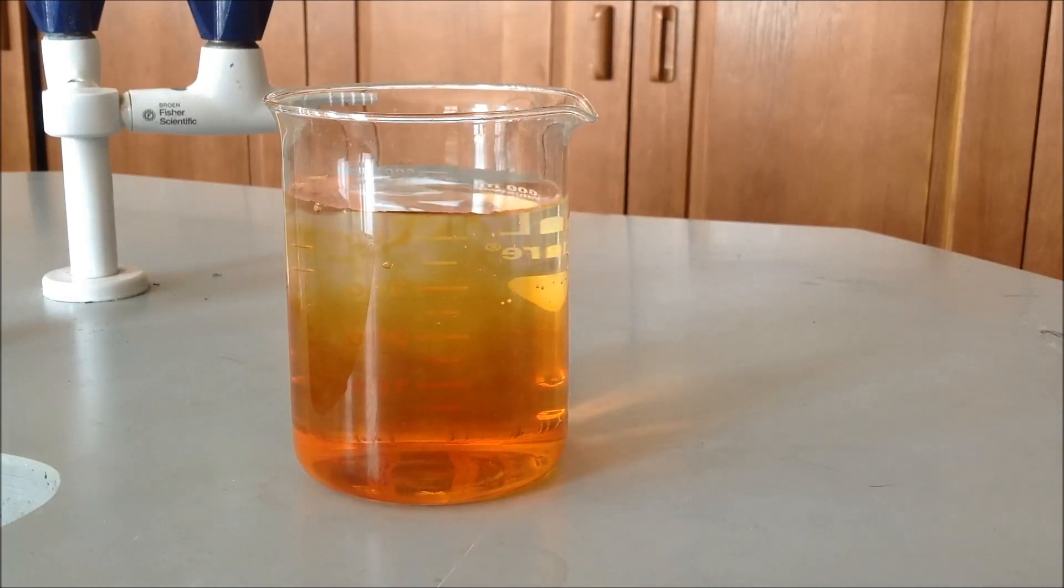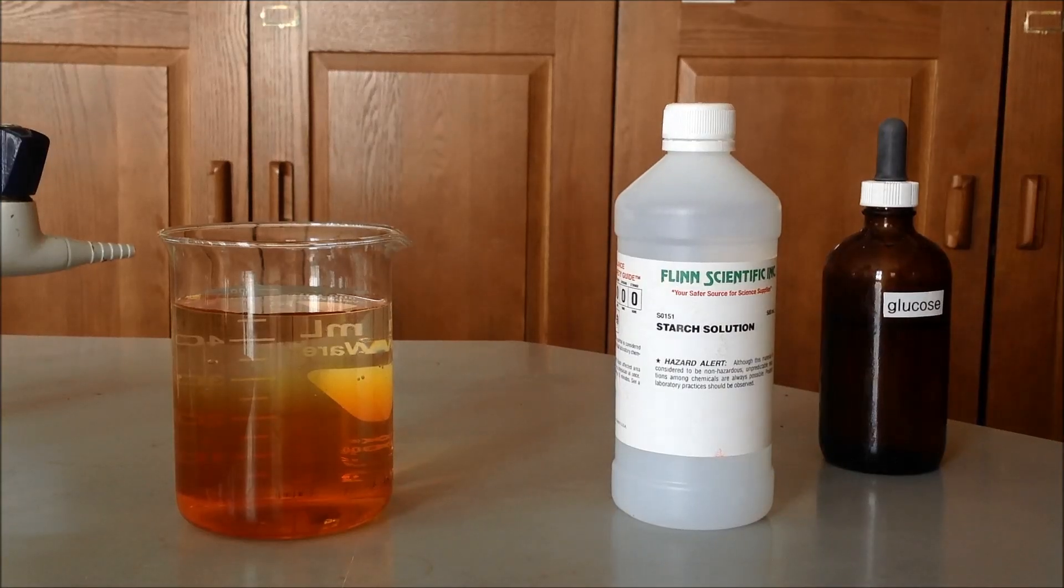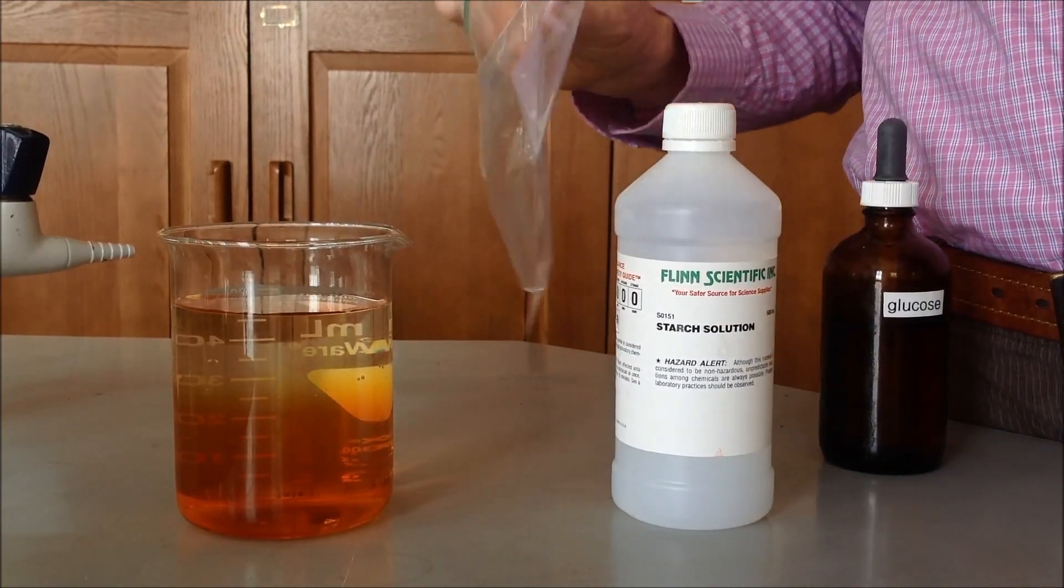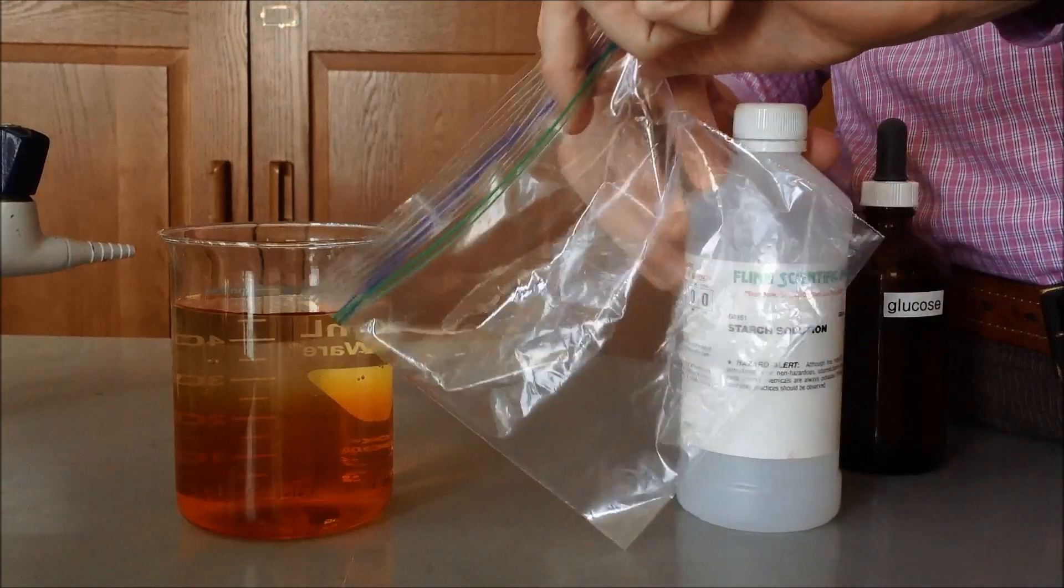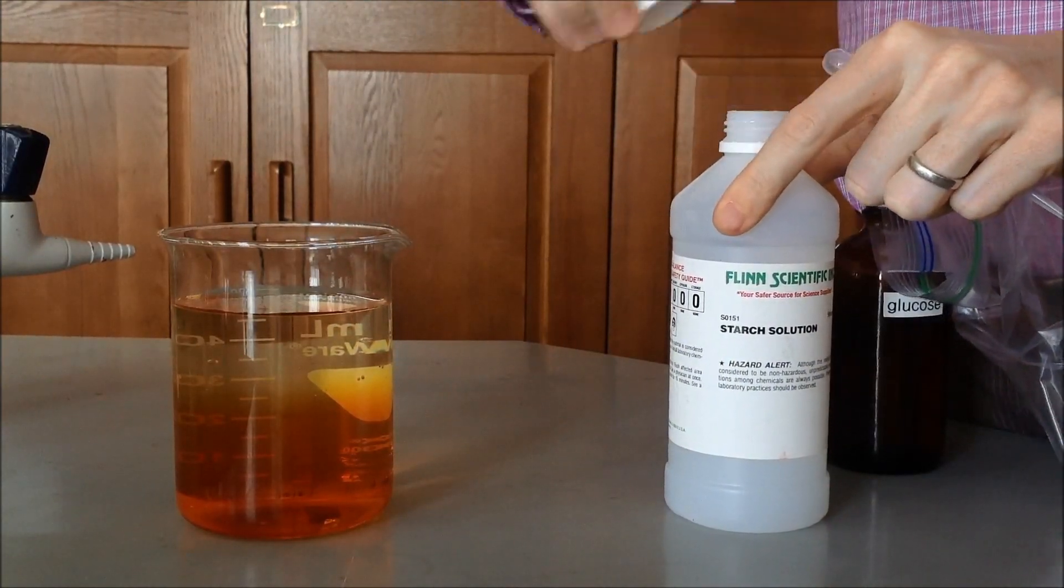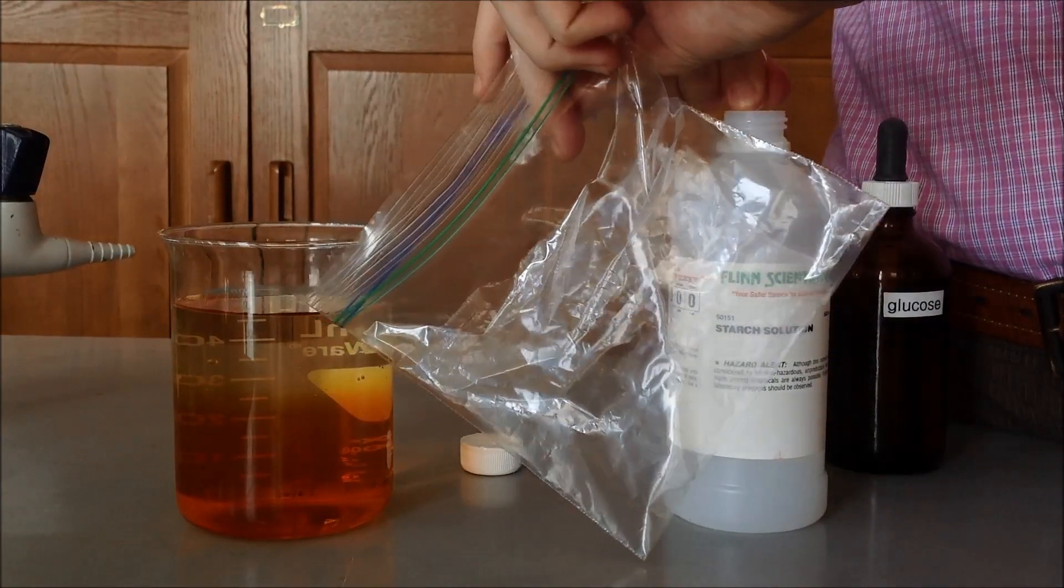The next part of the procedure is to add the starch solution and the glucose solution to the Ziploc bag which is our model for a membrane. So first we'll add the starch solution, you can make your observations of that, and then we'll add the glucose solution. We'll be adding about the same amount of both to the bag.